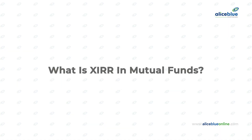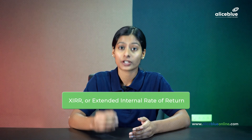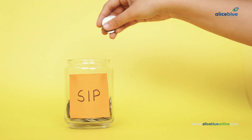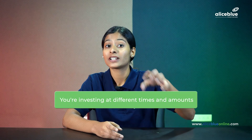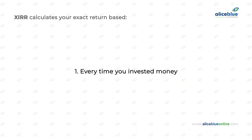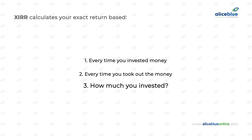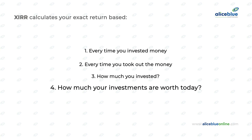So now let's look at what is XIRR in mutual funds. XIRR, or extended internal rate of return, is used when you are investing money in mutual funds but not all at once. Maybe you're doing monthly SIPs or you add some extra money every now and then. The point is that you're investing at different times and amounts, so it becomes quite hard to know exactly how much you have earned in total. XIRR calculates your exact return based on every time you invest money, every time you took out money, how much you invested, and how much your investments are worth today.